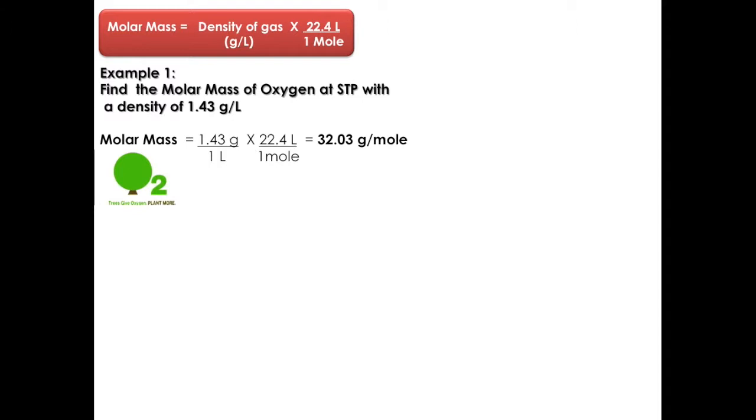Let's apply this to the next example. Find the molar mass of oxygen at STP, having a density of 1.43 grams per liter. The density that was given, we multiply it as the conversion factor. We cancel out the liters and we will get to have 32.03 grams per mole, which is the molar mass of oxygen at these conditions.